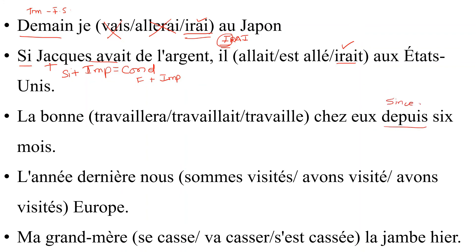Next: 'La bonne — depuis ce mois.' 'Depuis' is the clue — it means 'since' and signals the simple present tense. 'Travaillera' is simple future — wrong. 'Travaillait' is imparfait — wrong. 'Travaille' is the simple present — that is the answer.